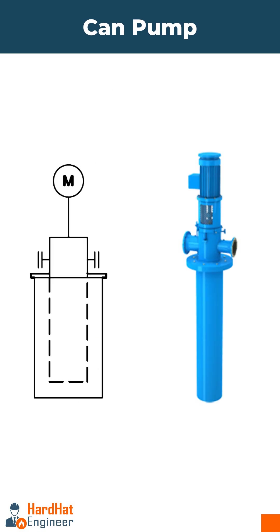Lastly, you can see the symbol for the can pump. This pump is used when there isn't enough pressure at the suction of a horizontal centrifugal pump. It's often installed below ground to increase the NPSH available.